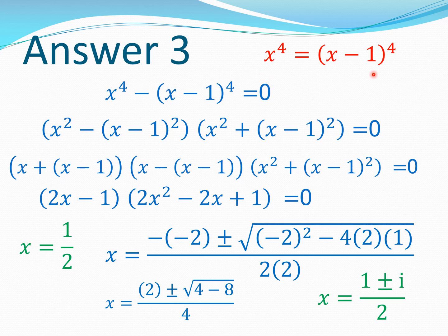Let's come to question number three, which involves solving this equation. Sometimes people make the mistake of simply cancelling the exponent 4 and saying x equals x minus 1, which doesn't lead anywhere good. Some people add a plus-minus and get one root, but there are going to be more than one solution — often complex numbers. We can rewrite the equation in the form a² minus b² equals zero, using the formula a² minus b² equals (a minus b)(a plus b), where we think of x as a and x minus 1 as b.